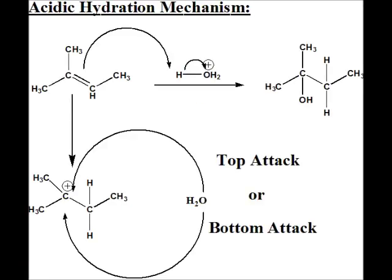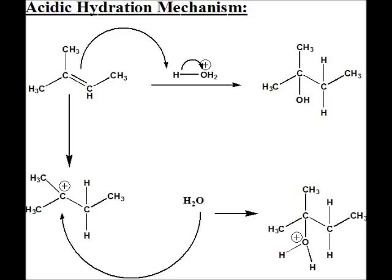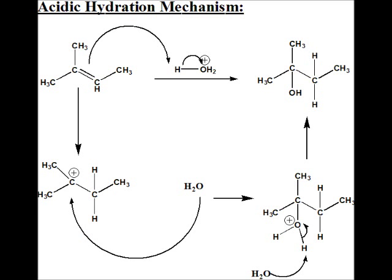When we have a trigonal planar carbocation, attack can come from the top or the bottom, so you could get a mixture of the two OH positions — some attacking from the top and some from the bottom. As we proceed forward with this carbocation, H2O is going to come in and attack. Similar to halohydrin formation, the H2O brings a proton with it. So it's H2O bound to what is now an alkane molecule, and the oxygen has a positive charge. We're going to need another water molecule to come in and grab that extra proton. Those electrons between the proton and oxygen go back to the oxygen, and now we have alcohol formation.